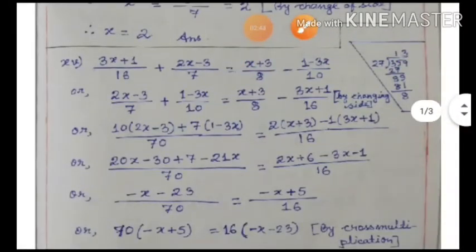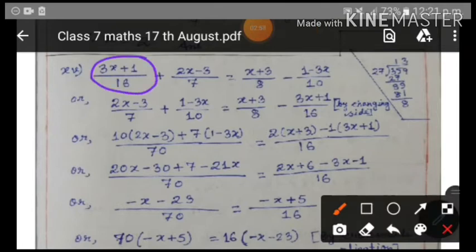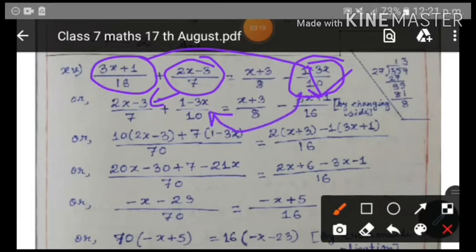For the next problem, we will first rearrange the terms before taking the LCM. One term is kept on the left-hand side, another has changed sides and become minus. A term that was present with a minus sign has changed side and become plus. You can directly work it out without rearranging and will get the same answer.